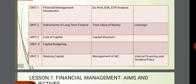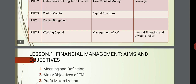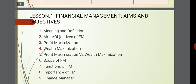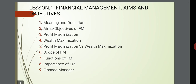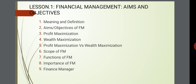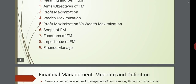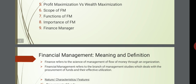First we will deal with financial management introduction. Lesson 1 is financial management aims and objectives. There are nine points which we will cover: meaning and definition, aims and objectives of financial management, profit maximization, wealth maximization, profit maximization versus wealth maximization, scope of financial management, functions of financial management, importance of financial management, and the roles and responsibilities of a finance manager.